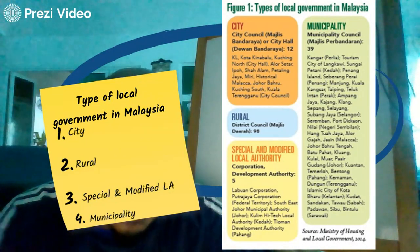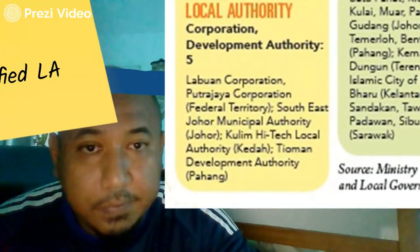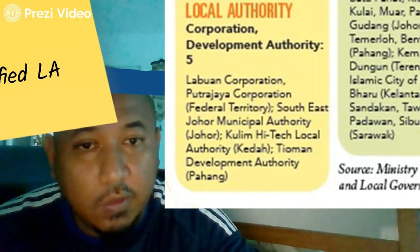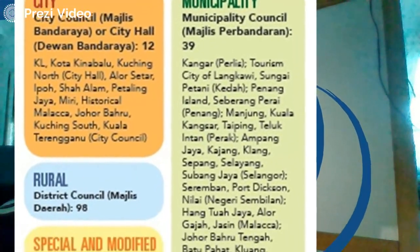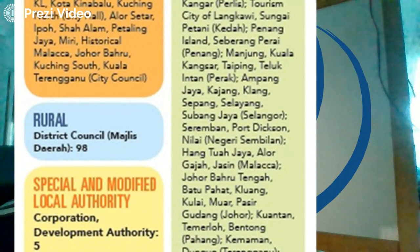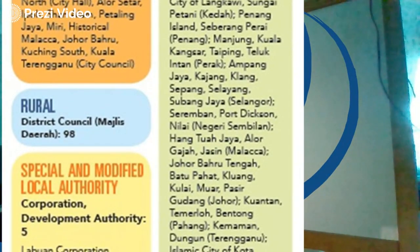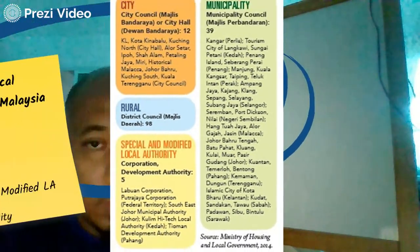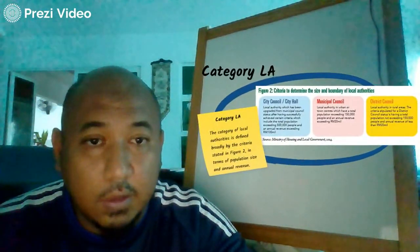Special and modified local authorities are corporation development authorities — there are five, including Labuan, Putrajaya, South East Johor Municipal Authorities (around Pasir Gudang area), and Kuantan high-tech and human development authority in Pahang. Under municipal authorities (Majlis Perbandaran), there are 39, including Klang, Manjung, Taiping, Seremban, Batu Pahat, Kluang, and others.